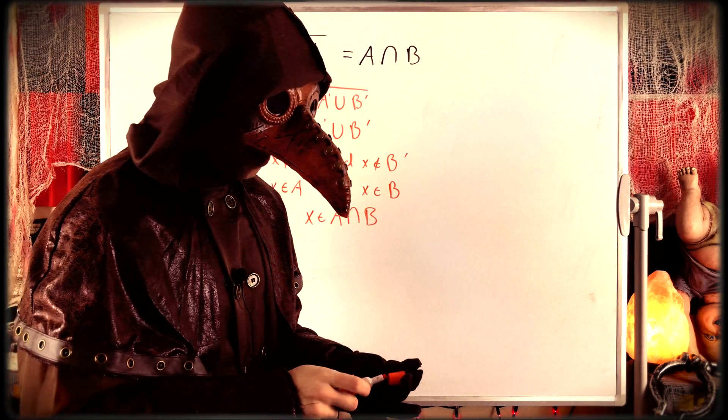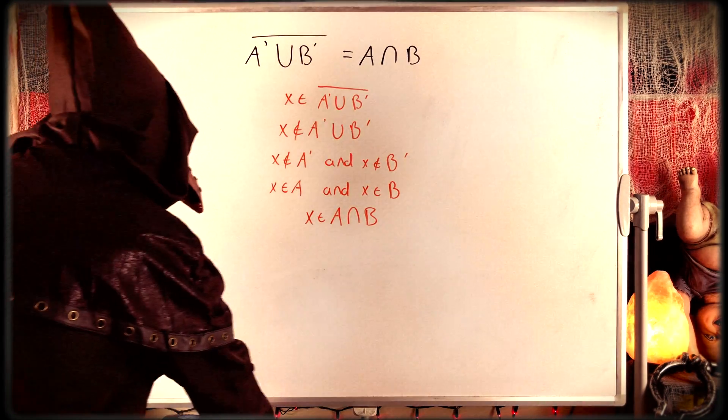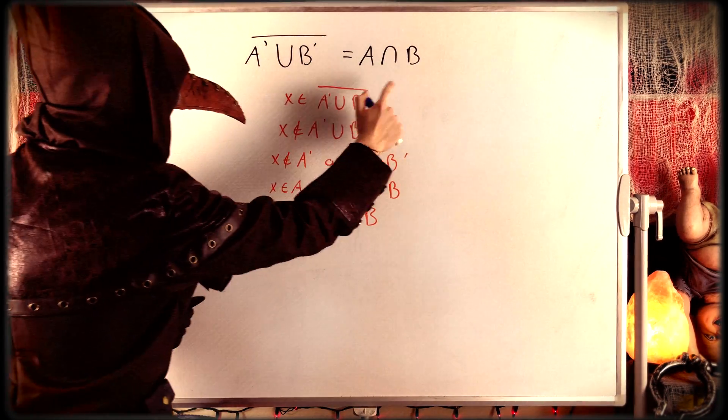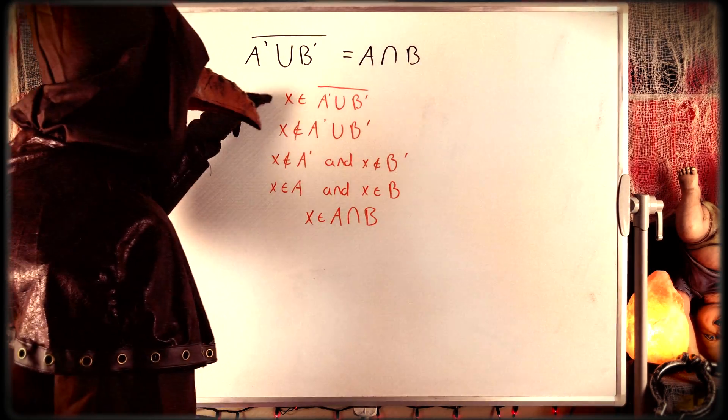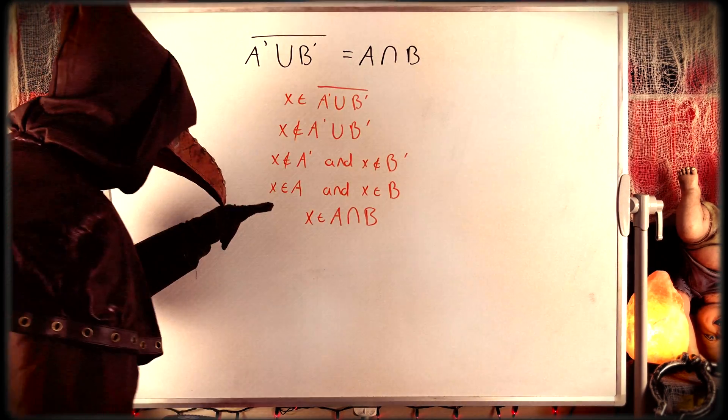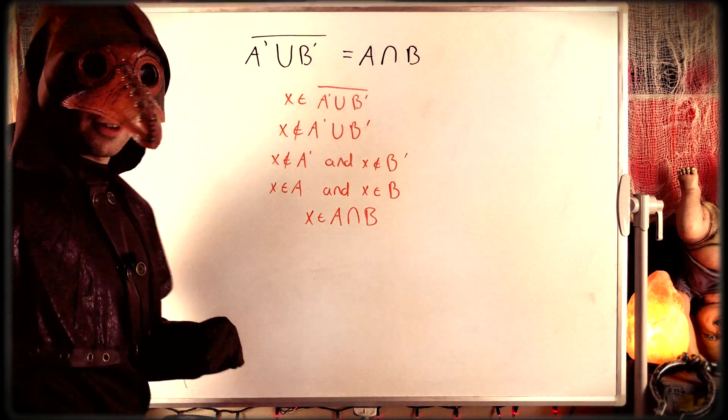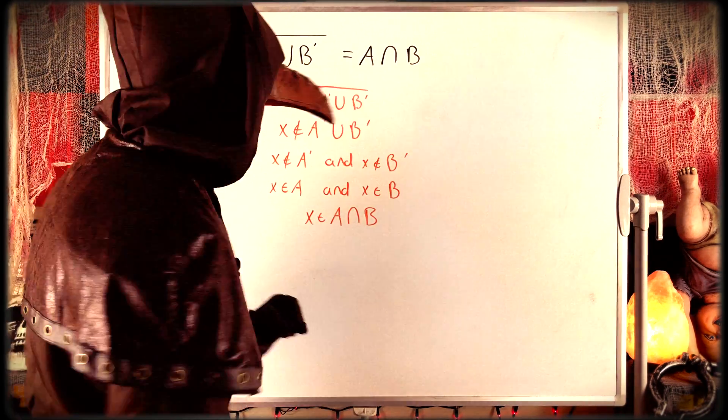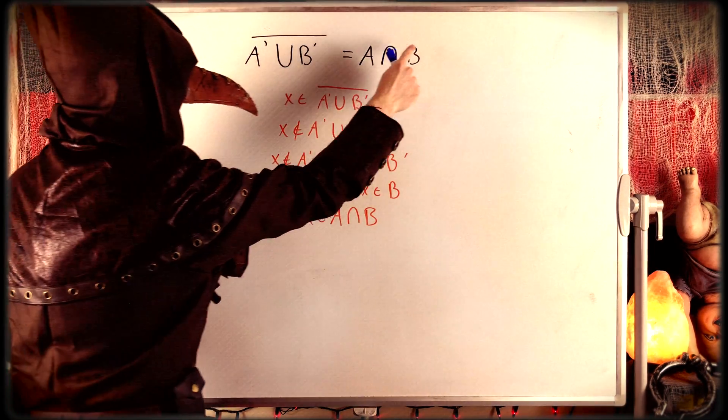Just like that. So we've just shown that any arbitrary element of the complement of A complement union B complement, take any element from that set, it has to be in A intersect B. Thus, by definition of subset, this is a subset of this.